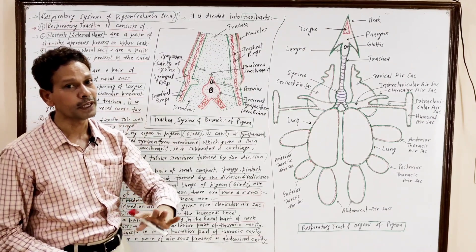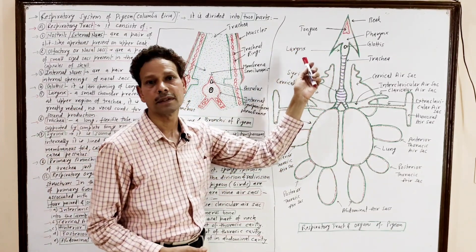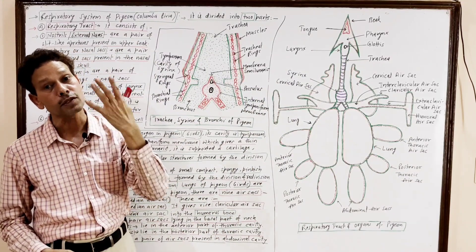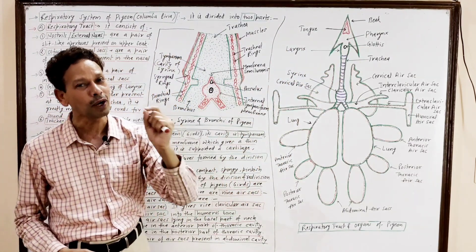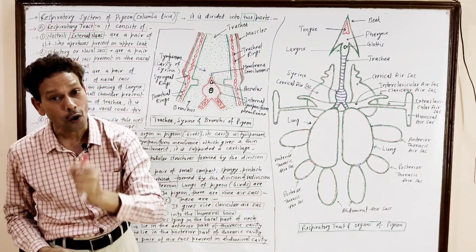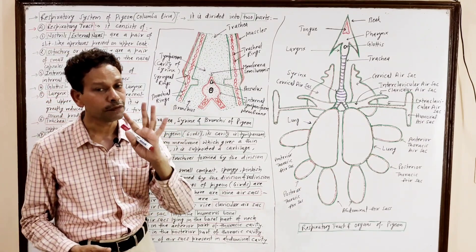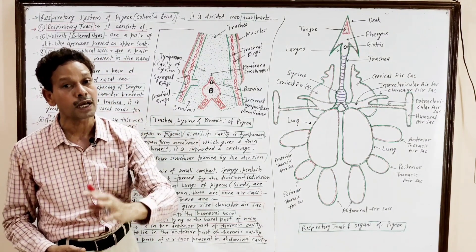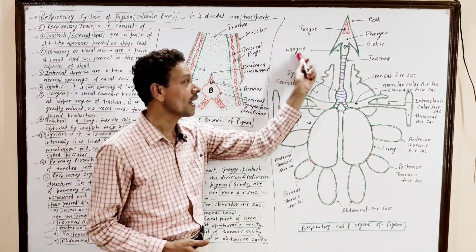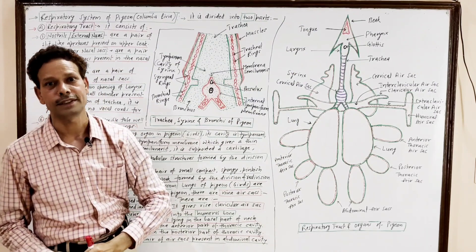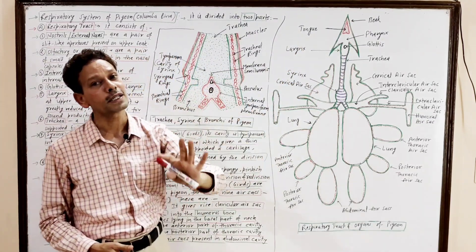The next part of this respiratory system is the larynx. In the case of pigeon — in the case of birds — this larynx is greatly reduced. As in the case of mammals and human beings, the larynx is a well-developed sound-producing organ. But in the case of birds, the larynx is not a sound-producing organ, as the vocal cords — the membranous folds which involve in sound production — are absent in the case of pigeon.